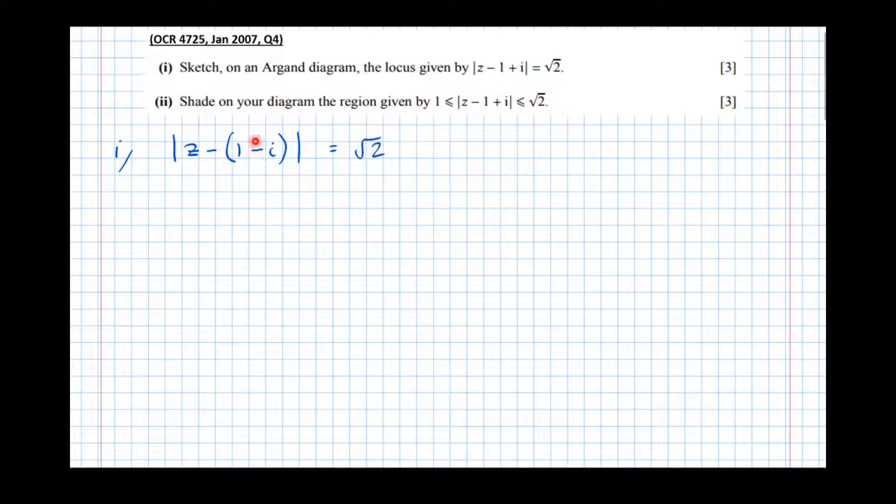And now that we've got a full complex number that's been subtracted, we can say that the center of that circle is 1 - i. So magicking an Argand diagram out of thin air, what we're going to do now as requested is sketch that locus on the Argand diagram. So the center of the circle is at 1 - i. So there it is there.